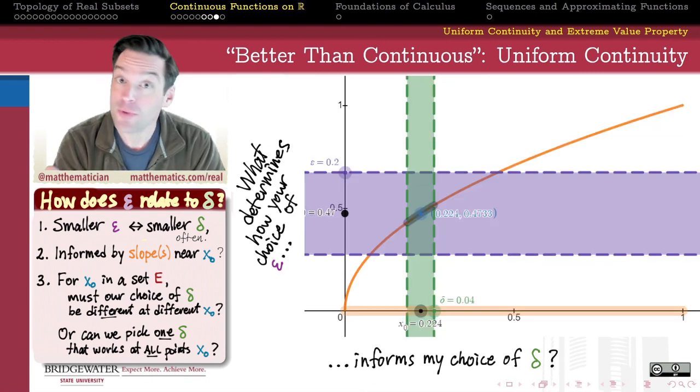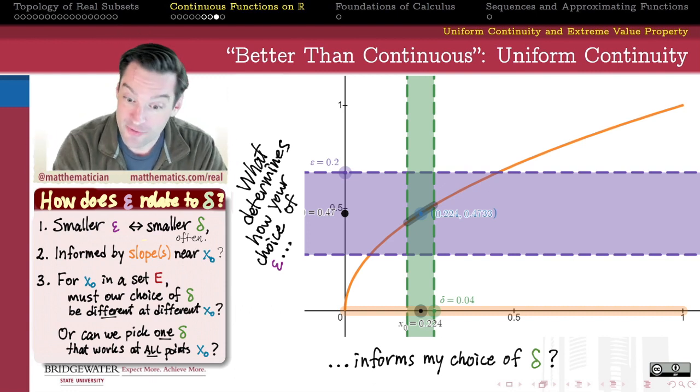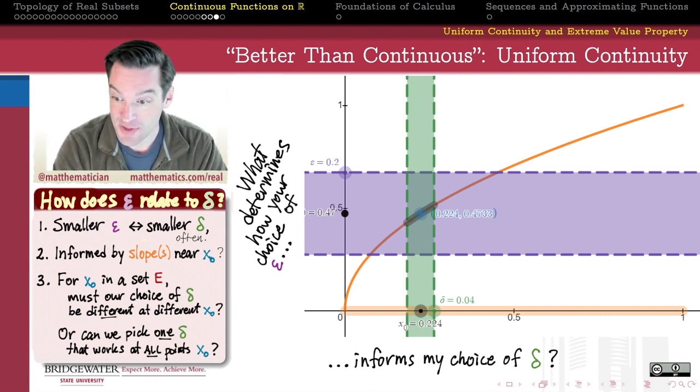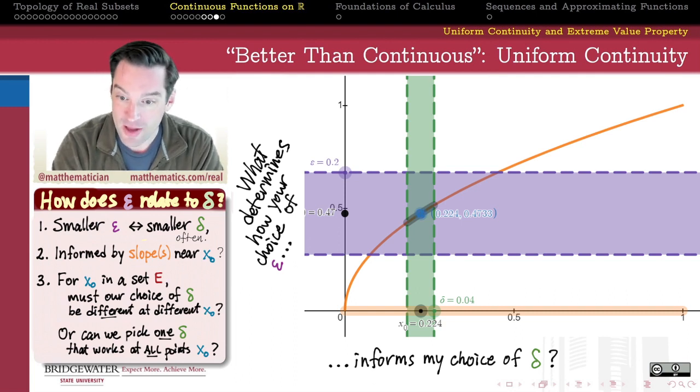So what might a function that does that look like? Let's consider, I don't know, the square root function. On the same domain, which is the open interval from 0 to 1. So my x values reside on the x-axis between 0 and 1, but I'm not including 0 and I'm not including 1.